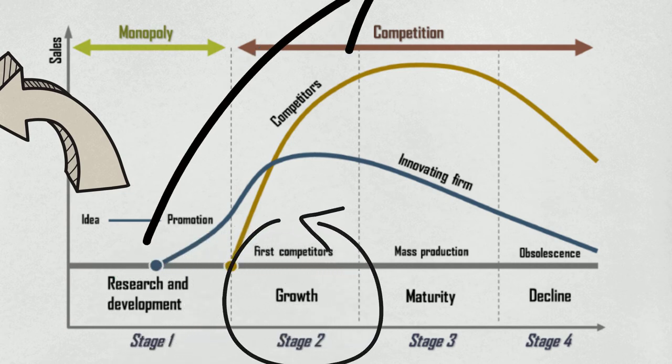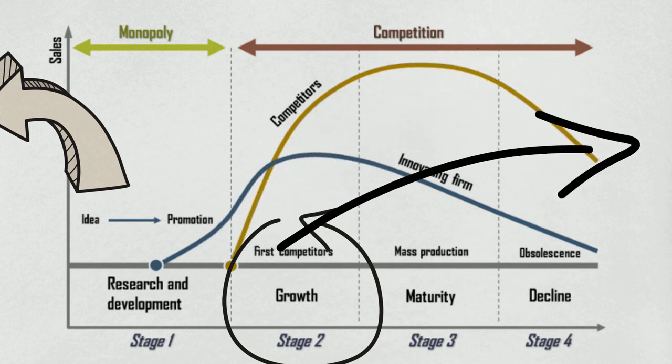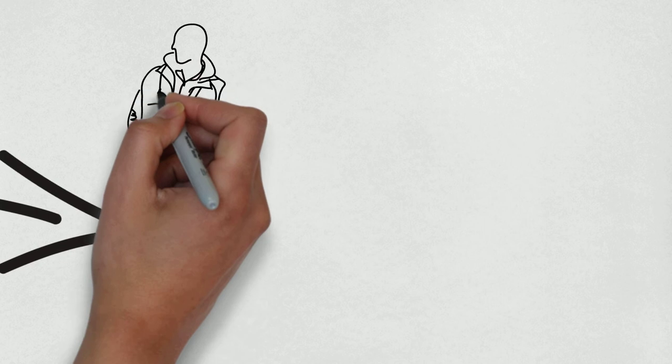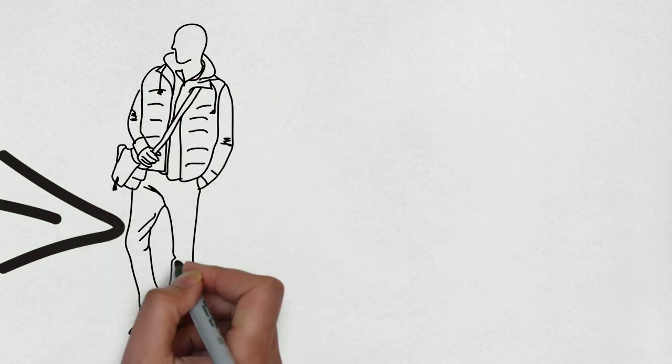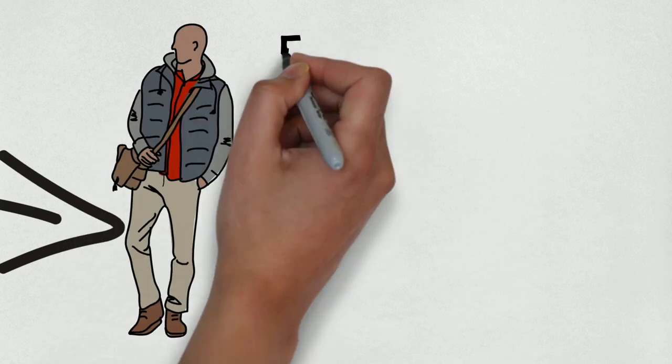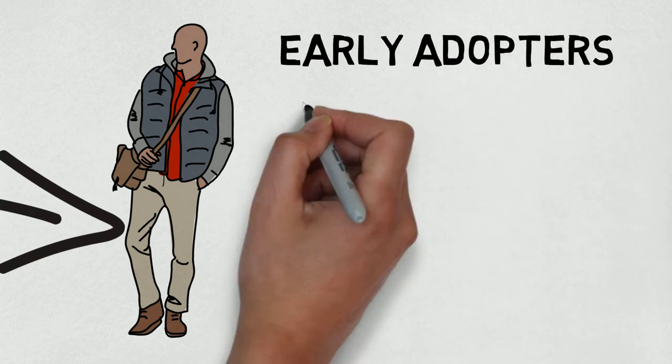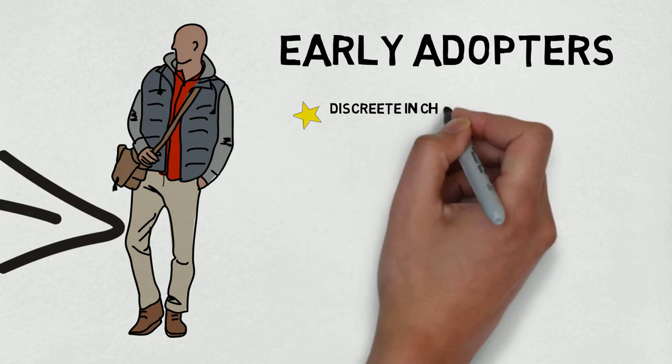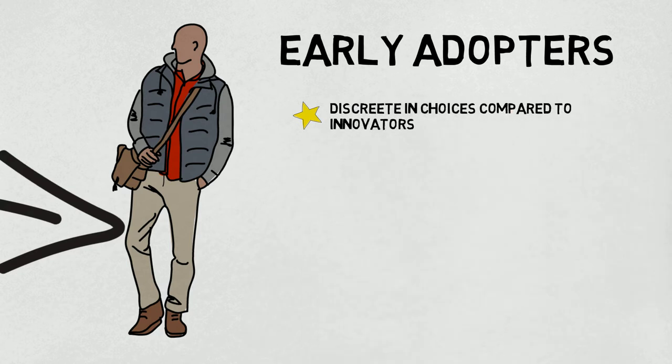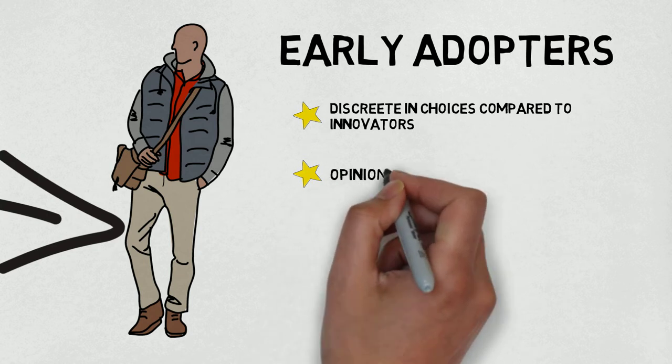Next, we look at the early adopters. This group is more discreet in adoption choices than innovators. They have the highest degree of opinion leadership amongst the adopter categories. Once we had the sunglasses launched, we targeted the early adopter group. Since we knew we had no competition, we continued to keep the price high and targeted concerts and events where many people are considered to make the impulse buy.